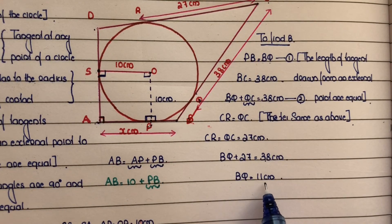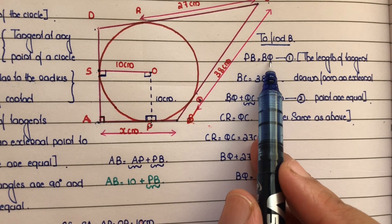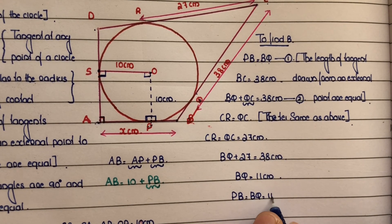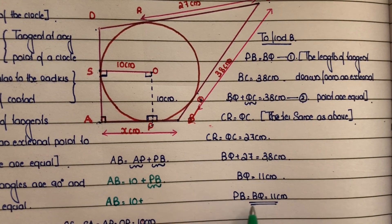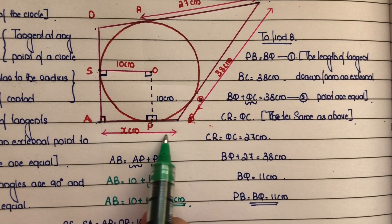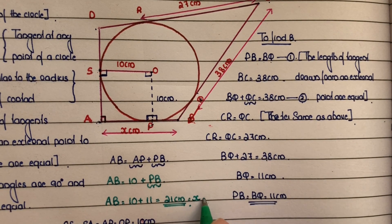Now we have found BQ equals 11 centimeters. Substituting into equation 1: PB equals BQ equals 11 centimeters. Substituting into AB: AB equals 10 plus PB equals 10 plus 11 equals 21 centimeters. So the value of X equals 21 centimeters.